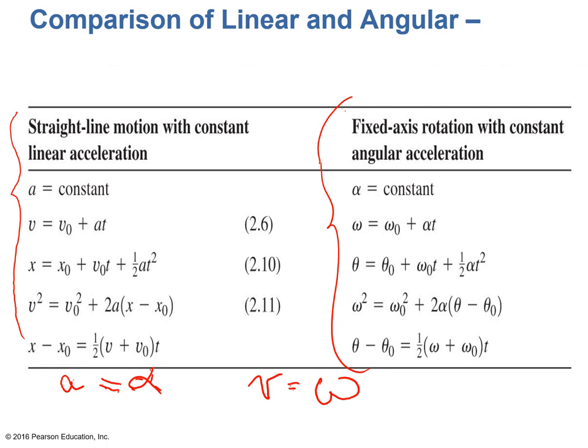X for linear displacement is theta for angular displacement. You would just replace a with alpha, v with omega, and x with theta, and you've changed from linear motion in a straight line to rotational motion.